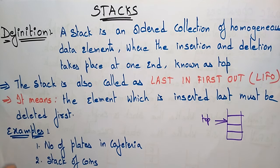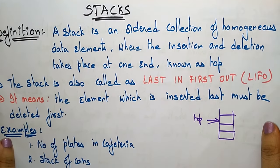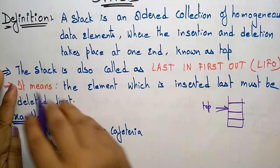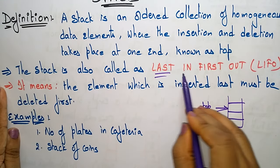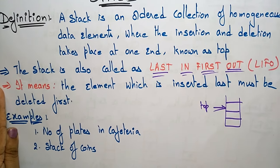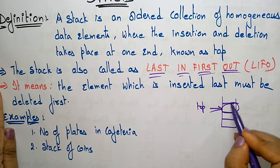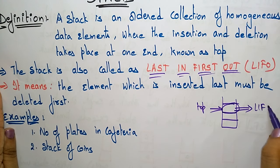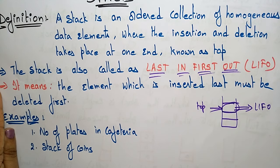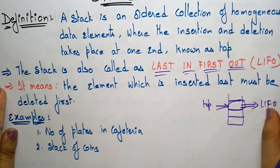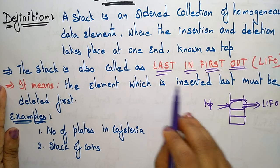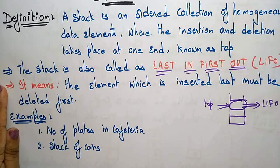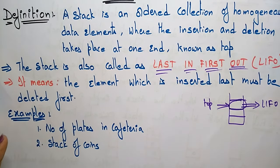A stack is also called LIFO — Last In First Out. Whatever the last element you have put in, that has to be taken out first. The element which is inserted last must be deleted first — that is the meaning of LIFO.